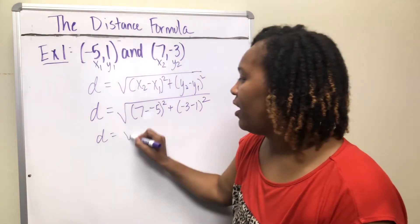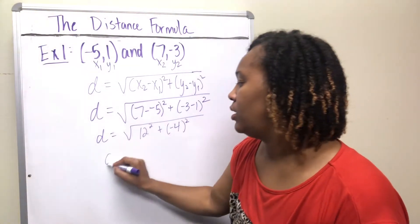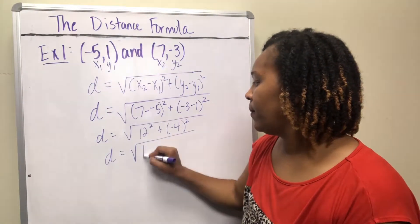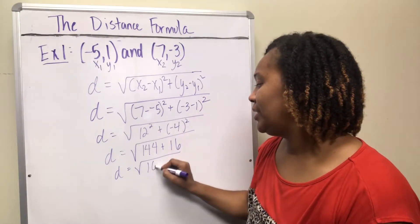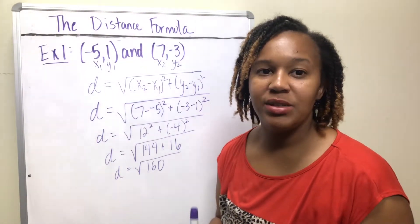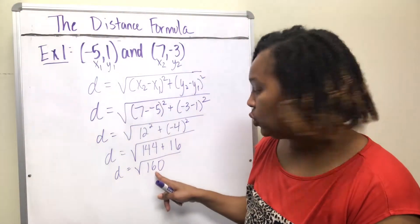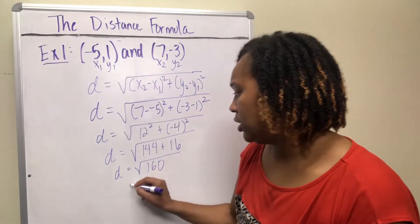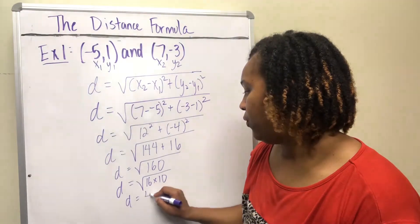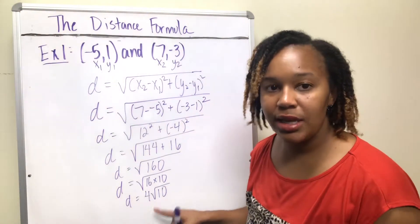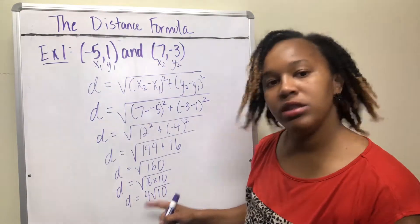Subtracting the x's: 7 − (−5) = 7 + 5 = 12, so 12². Subtracting the y's: −3 − 1 = −4, so (−4)². That gives 144 + 16 = 160. Now simplify: 160 = 16 × 10, and the square root of 16 is 4, so the exact answer is 4√10.